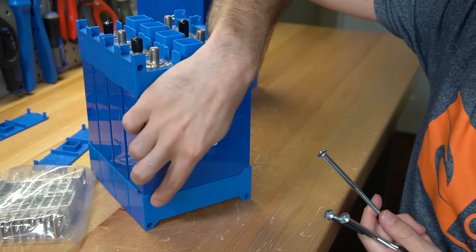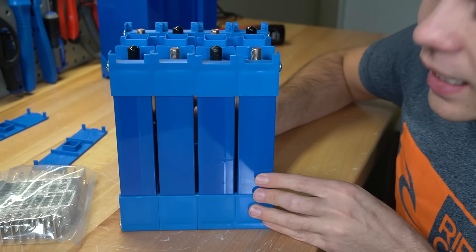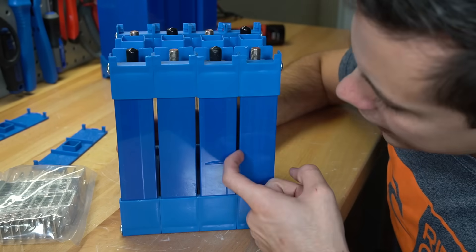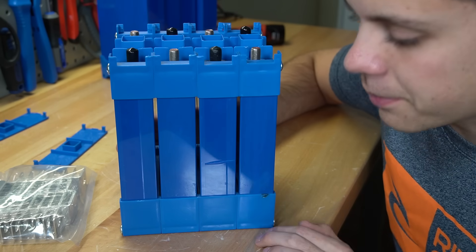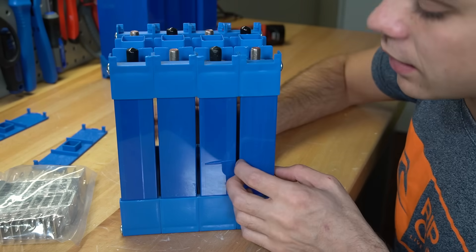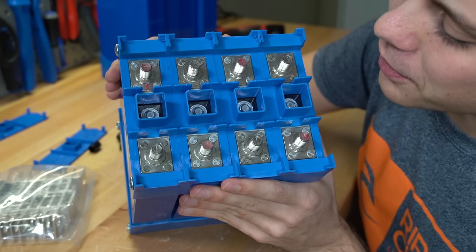Now you just need to add three more rods to the other holes. Now the cells are connected together and what's really cool is that there's an air space for convective airflow between the cells. That's pretty important for prismatic cells of any kind. Look at how beefy these terminals are. They are absolute monsters.